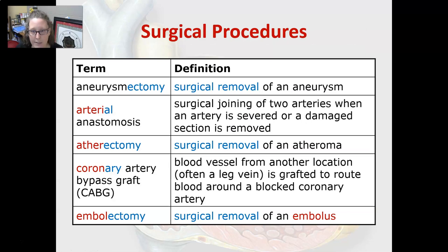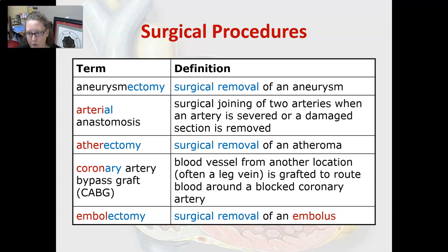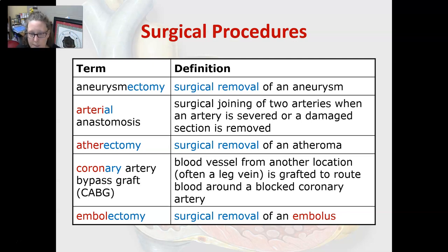An aneurysmectomy is a surgical removal of an aneurysm — a bulging of a vessel. An arterial anastomosis is a surgical joining of two arteries when an artery is severed or damaged; a damaged section is removed and the two arteries are joined together.